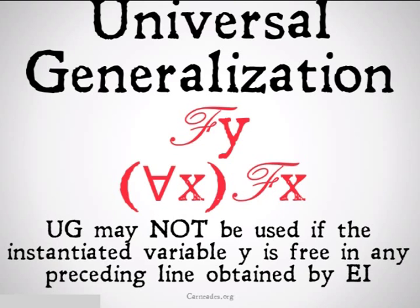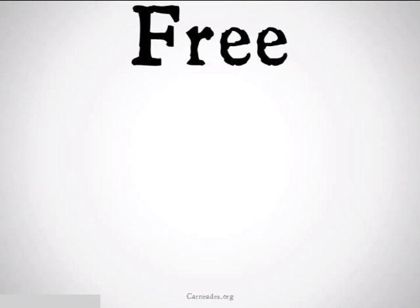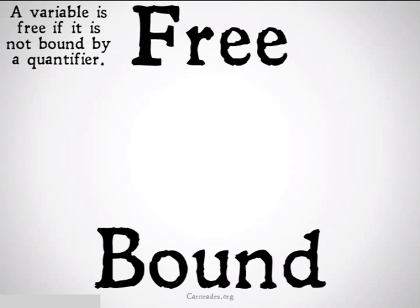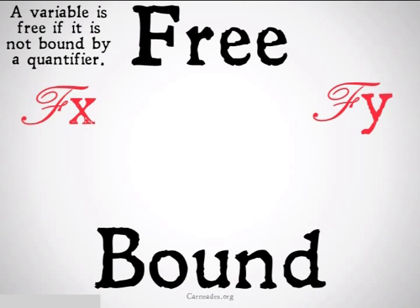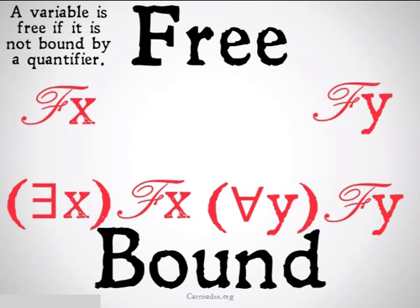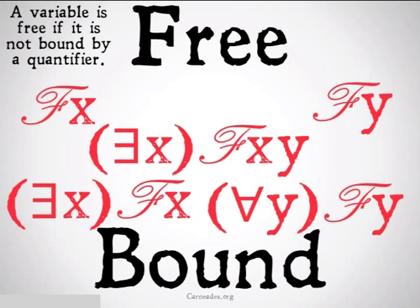What does 'free' mean? A free variable is distinguished from a bound variable. A free variable is one that's not bound by a quantifier — examples include 'X is an F' or 'Y is an F.' Bound variables, on the other hand, are variables that are bound by a quantifier — so 'there exists an X such that X is F' or 'for all Y, Y is F.' This is an interesting example because it contains both: in 'there exists an X such that X bears relation F to Y,' the X is bound while the Y is free.